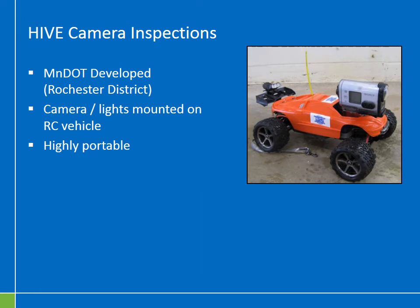The next type of inspection is the HIVE inspection — HIVE stands for Hydraulic Inspection Vehicle Explorer. This equipment is an innovative inspection tool developed by MnDOT's Rochester District. HIVE inspections are similar to traditional CCTV inspection, but HIVE is a leaner, smaller, and lighter piece of equipment. Similar to a CCTV camera, there's a digital camera and lighting mounted to a remote-controlled vehicle, and the operator drives this camera through a culvert to record the internal condition.